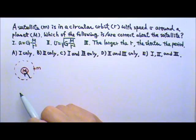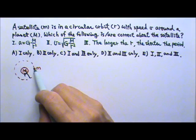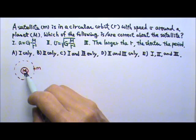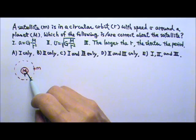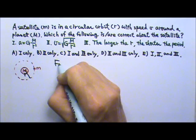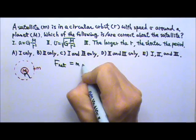So if we make a drawing, we would have the planet big M, satellite little m going around in this circle with radius r from the center of the planet to here. Since it's doing circular motion, we can start with the net force equals ma.